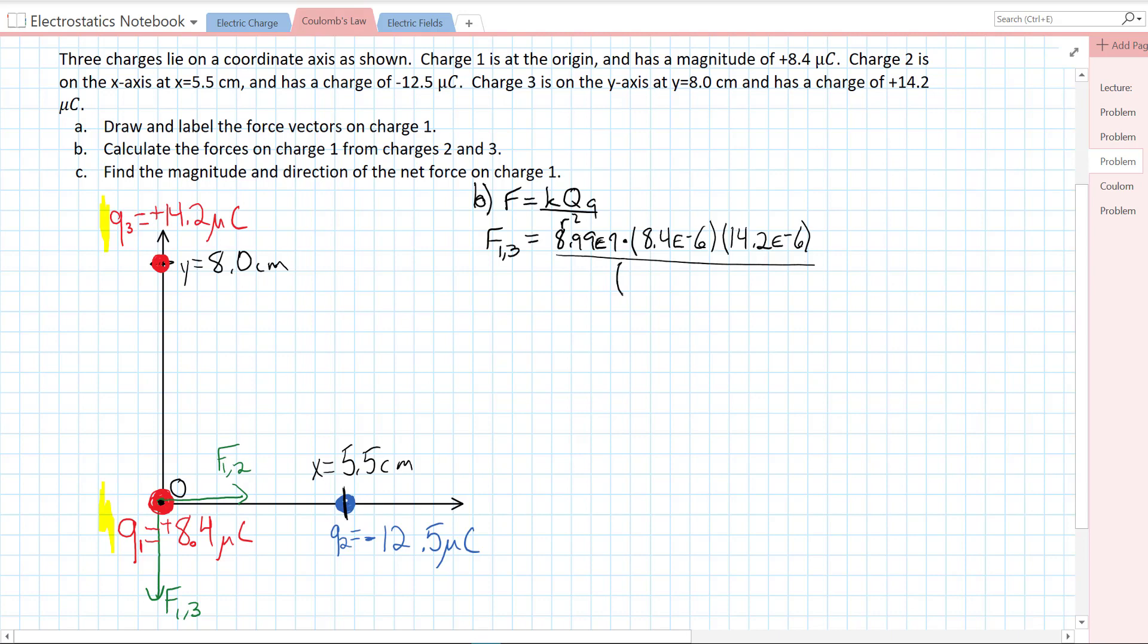Charge three is 14.2 microcoulombs, or 14.2 times 10 to the minus 6 Coulombs. The distance is the distance between our two charges. Q1 is at zero, Q3 is at eight centimeters, so the distance is just eight centimeters. We need to convert that to meters, so that is 0.08 meters. And that distance is squared. We get our force on one from three. We get 8.99 times 10 to the 9, plug it into a calculator, times 8.4 times 10 to the minus 6, times 14.2 times 10 to the minus 6, which equals 168 Newtons down.